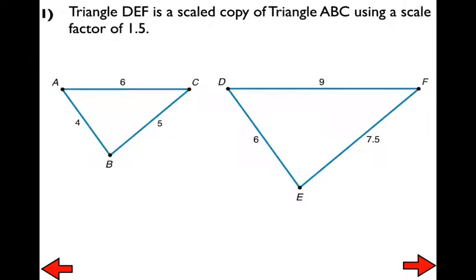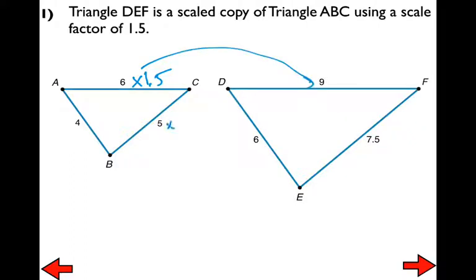Today we're going to dig a little deeper into terminology when talking about original figures, scaled copies, and scale factors. Triangle DEF is a scaled copy of triangle ABC. Triangle ABC was the original; we used a scale factor of 1.5, which means we multiply each side length by 1.5 to make the side lengths of triangle DEF.